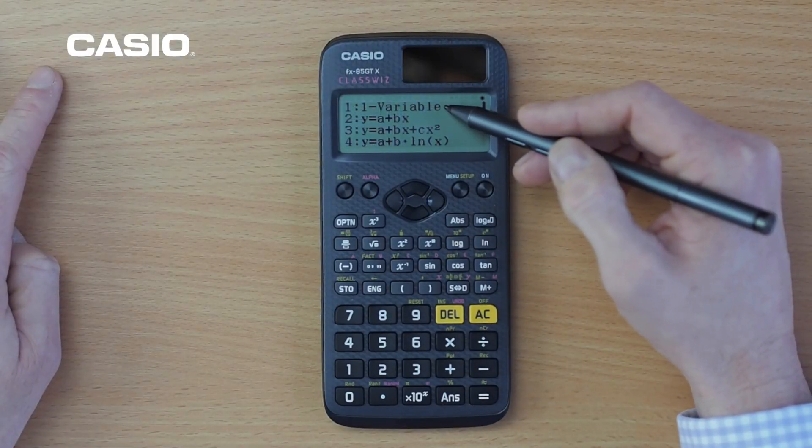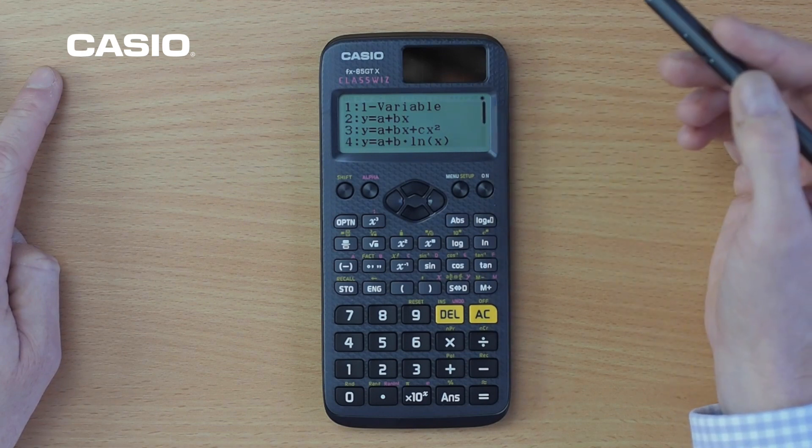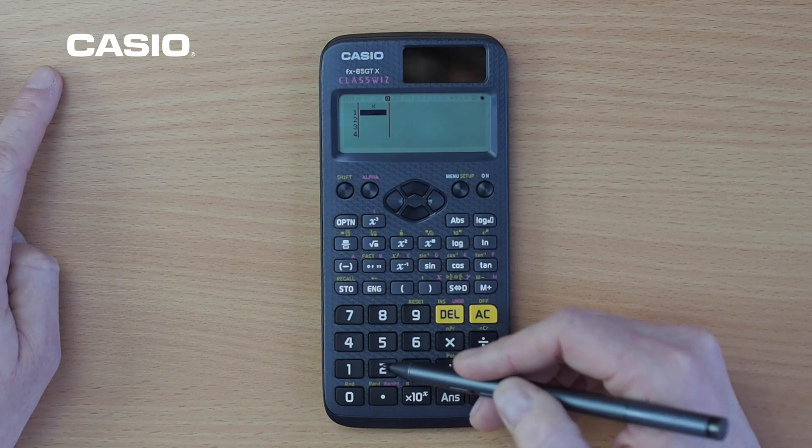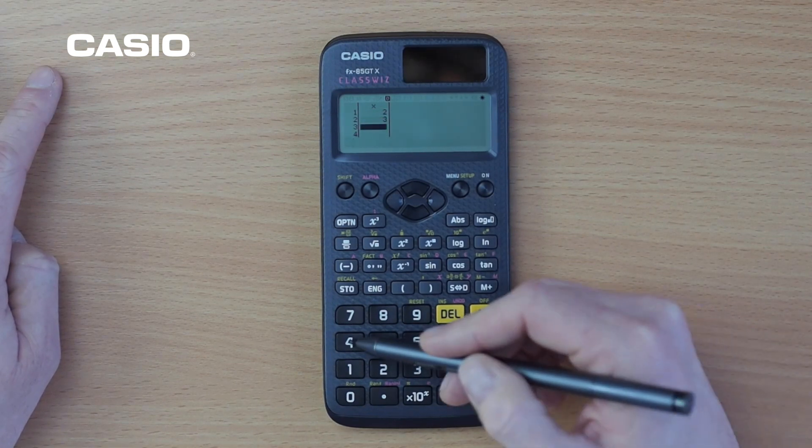We're going to look at some one variable statistics although there's regression options available. So we'll press 1 here and we could enter some data in here. So we'll have 2, 3 and 4.